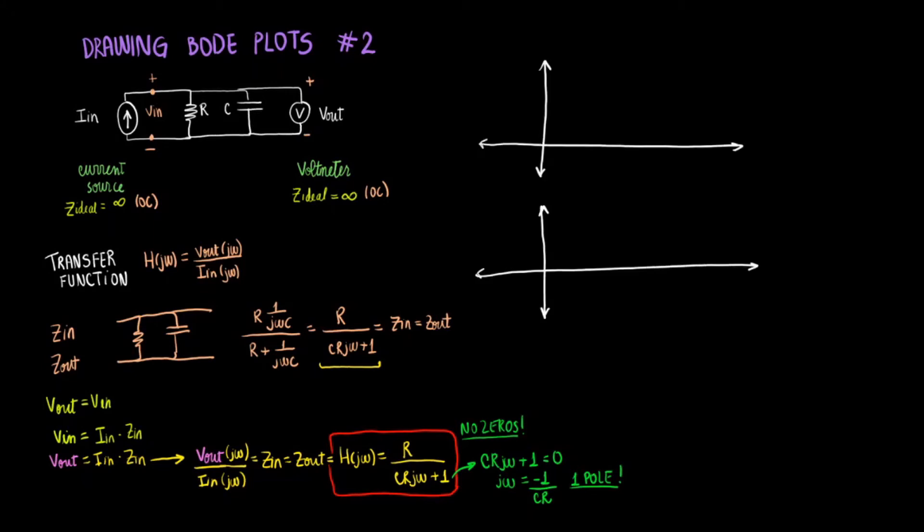So we will have a magnitude over frequency and a phase angle over frequency. Now let's draw on the plots the cutoff frequency, which we found to be 1 over C R. And now we're ready to start plotting.